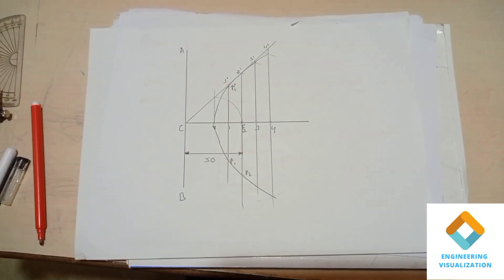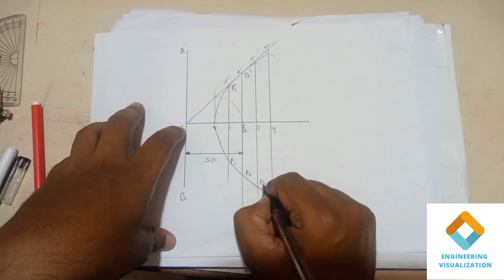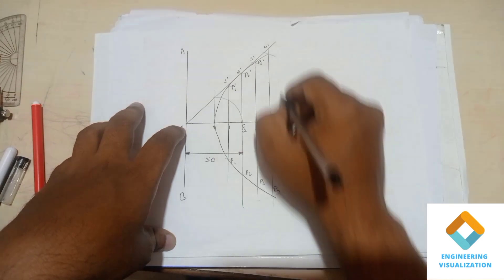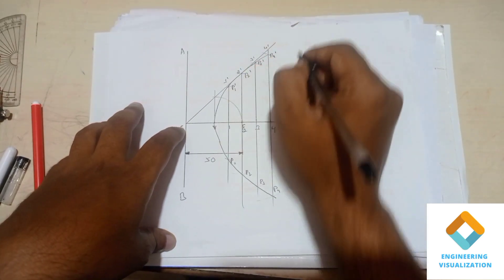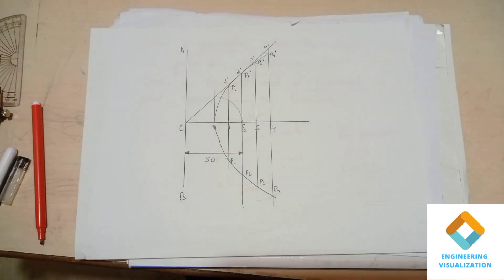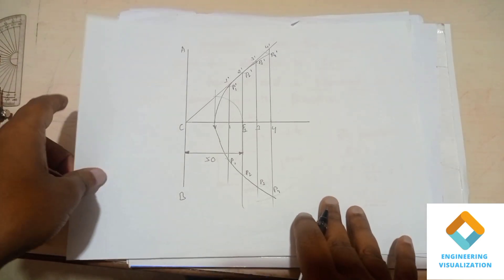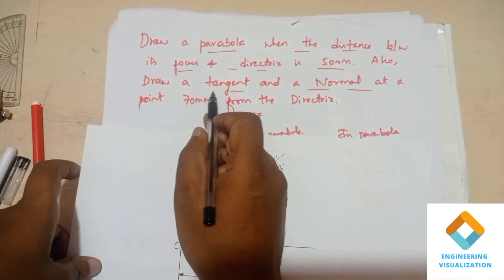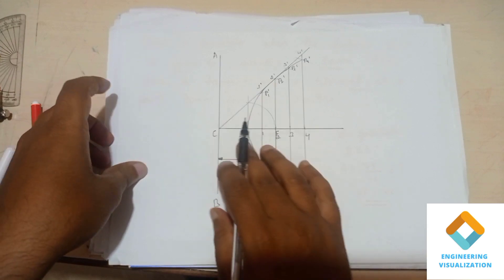The parabola is constructed. Name the points: P1, P1-dash, P2, P2-dash, P3, P3-dash, P4, P4-dash. Now we construct the tangent and normal as per the question — draw a tangent and normal at a point 70 mm from the directrix.